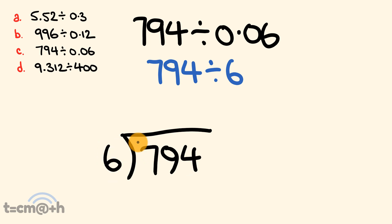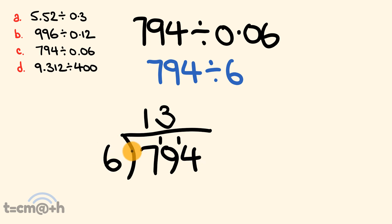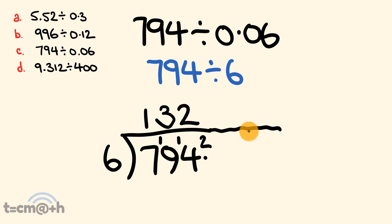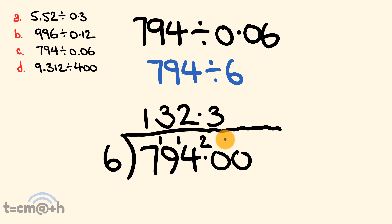So we have 794 divided by 6. How many times does 6 go into 7? It goes in once with 1 left over. How many times does 6 go into 19? 6 goes into 18 three times, so 3 times with 1 remainder. How many times does 6 go into 14? 6 times 2 is 12, so it goes in 2 times with 2 left over. We can continue by adding zeros, placing a decimal point, and carrying on. How many times does 6 go into 20? 6 goes into 20 three times — 3 times 6 is 18 — with 2 left over.